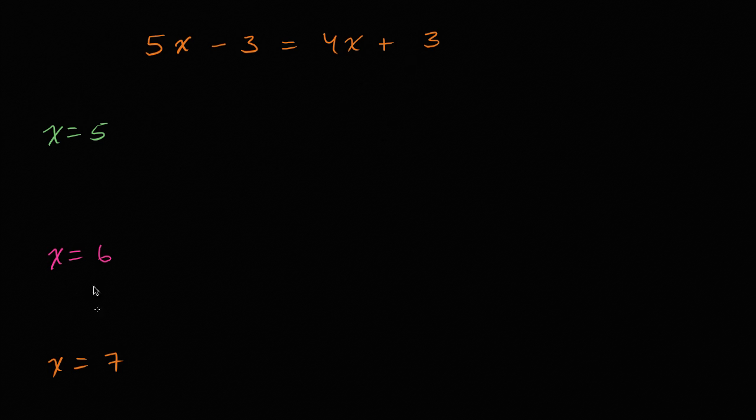And so I have three options here. I have x could be equal to five, x could be equal to six, and x could be equal to seven. And your goal is to pause this video and figure out which of these x's satisfy this equation, which of these values would make this equation be true.